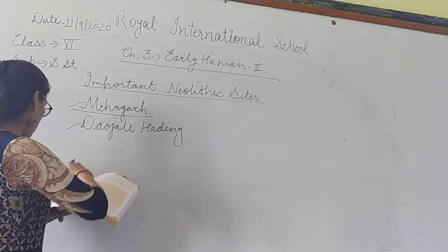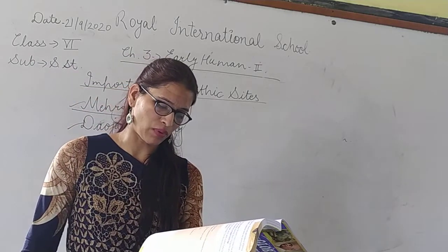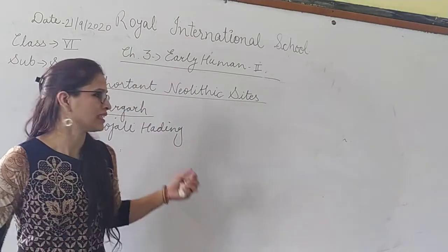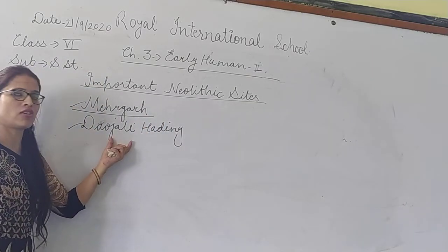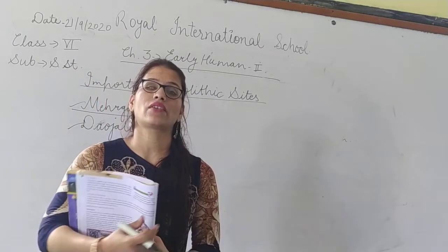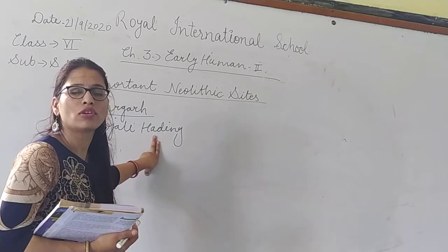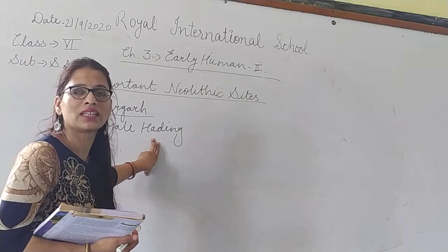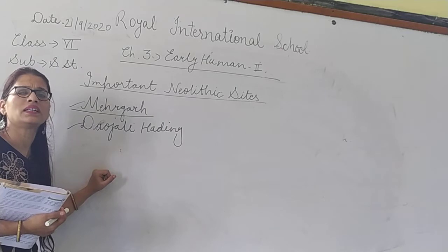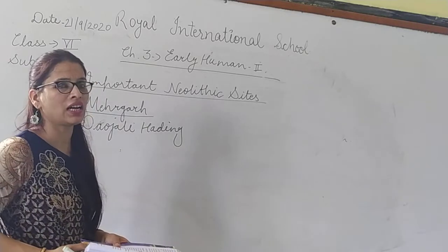Now we discuss Daojali Hading. Daojali Hading is located in India, in Assam state. Daojali Hading is also an important Neolithic site. It is located on the hills of Assam. This is different from Mehrgarh, which is in Pakistan — this one is in India.